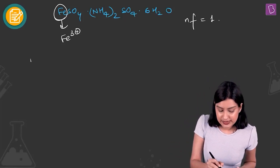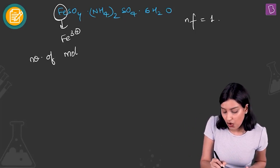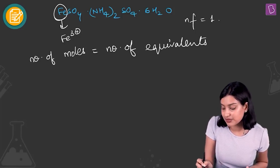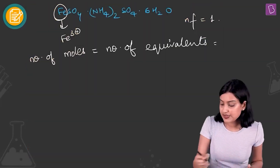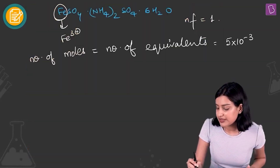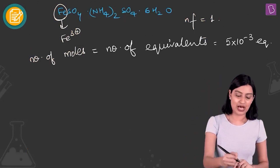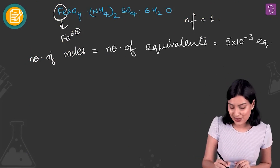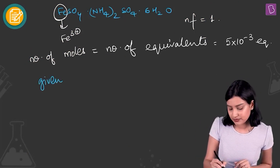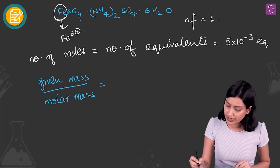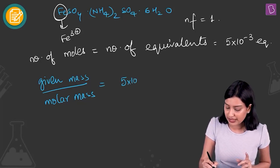Since the N-factor is 1, the number of moles of Mohr's salt equals its number of equivalents, which is 5 × 10⁻³. Using moles = given mass divided by molar mass, we set this equal to 5 × 10⁻³ and solve for the given mass.